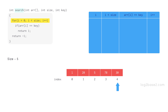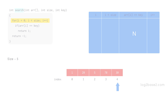The worst case will be when the key is present in the last position of the array — for example, if you have an array of 5 elements and the key is present in the 5th position, then the for loop will have 5 iterations, so the time complexity will be O(5). Generally if you have n elements you need n iterations, and the worst case time complexity will be O(n).